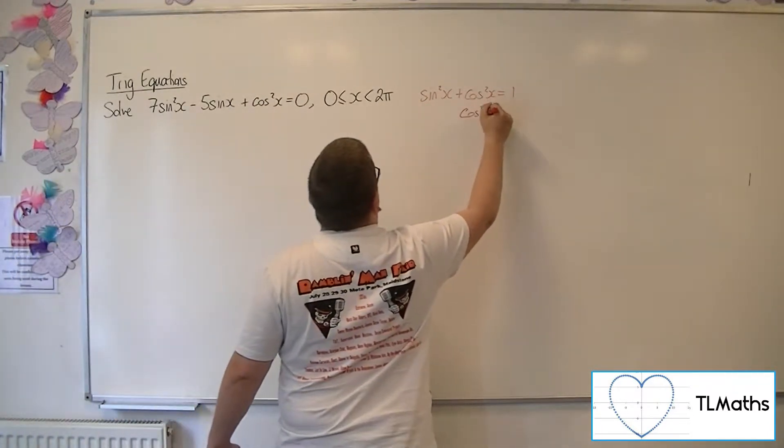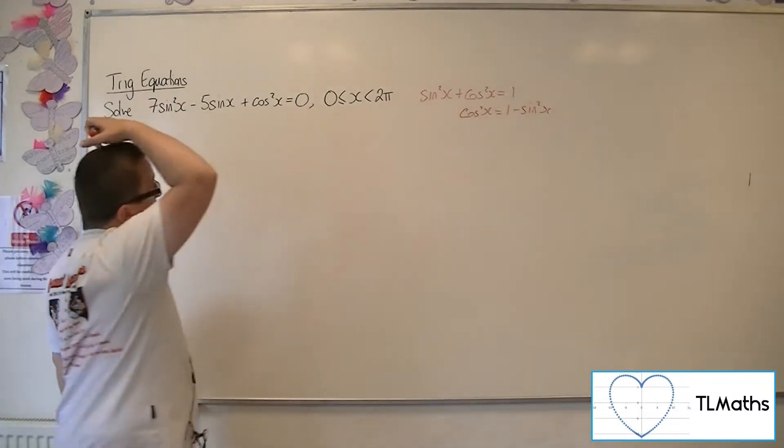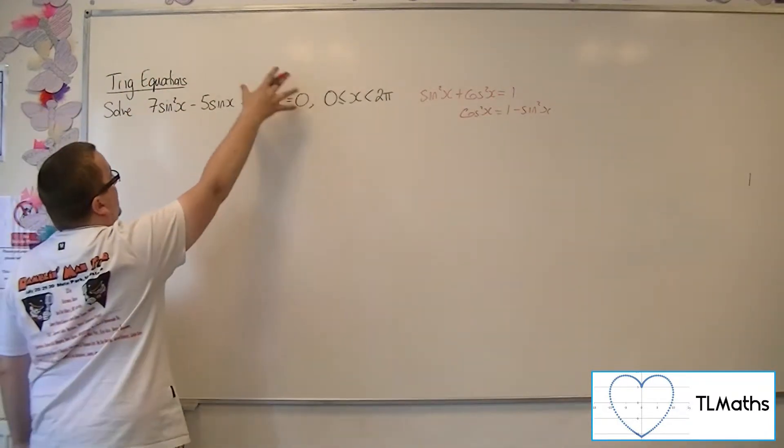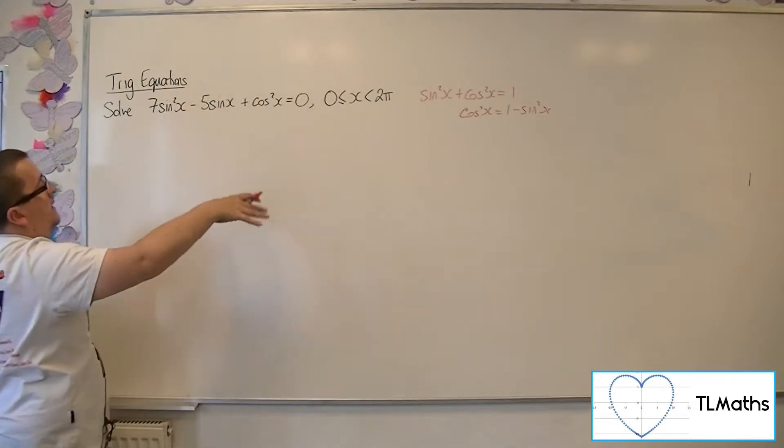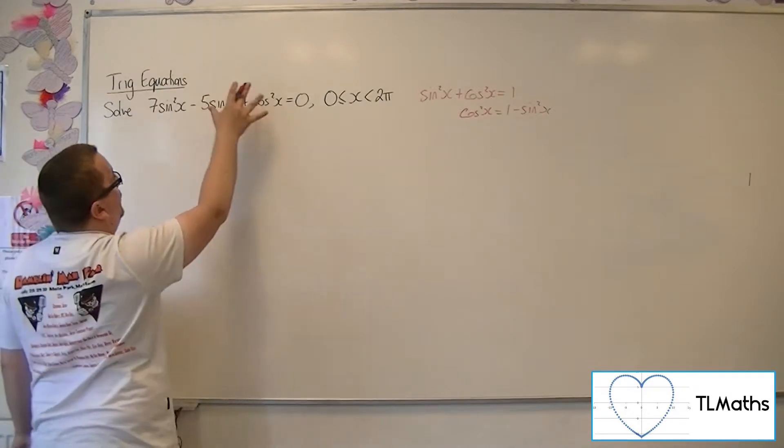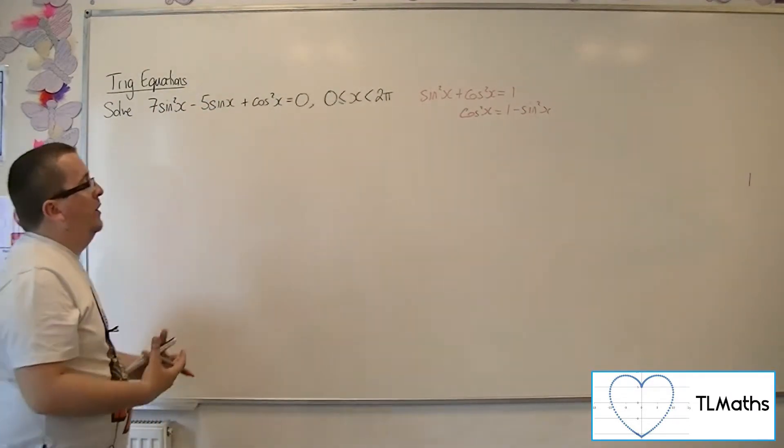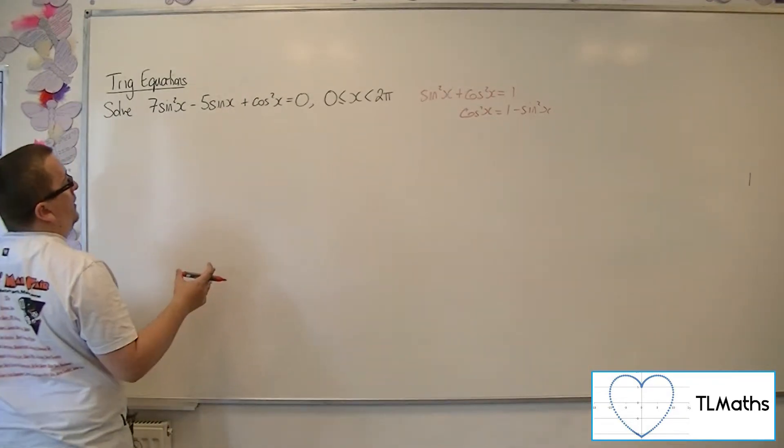So 1 - sin²x, subtracting sin²x from both sides, would leave me with a quadratic in sine only. If I replace the sin², I will have cos² and sine, which causes problems. So I'll replace the cos².